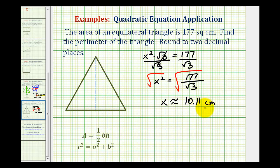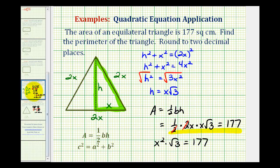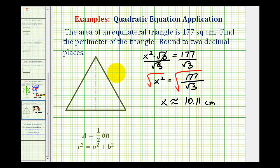Now let's go back to the previous screen for a moment. Notice the perimeter of this triangle would be 2x plus 2x plus 2x, or 6x. The perimeter equals 6x, which would be approximately 6 times 10.11 centimeters, which is 60.66 centimeters.